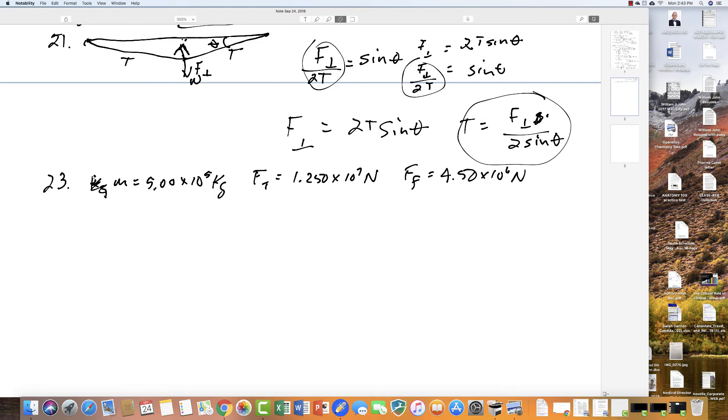Well, what you have to calculate here is you have to calculate the net force once you do all the work. So here's the rocket. And the force down toward the earth is the weight of the rocket and the friction force. And so F net is going to equal the thrust minus the weight of the rocket minus the friction, which is going to equal 1.25 times 10 to the seventh minus mg, which is 5 times 10 to the 5th times 9.8. That's the weight of the rocket minus 4.5 times 10 to the sixth.